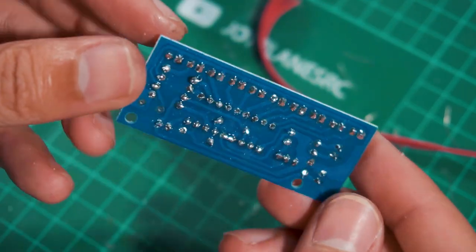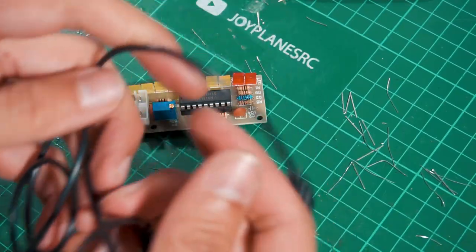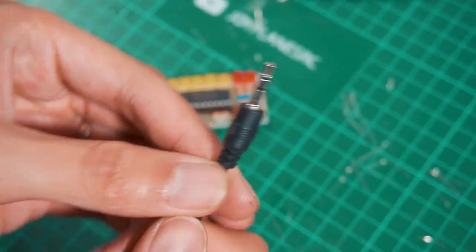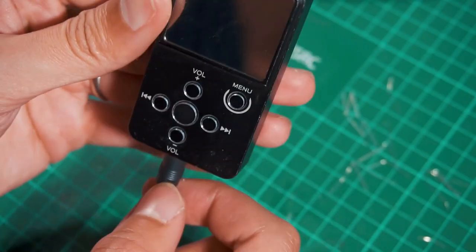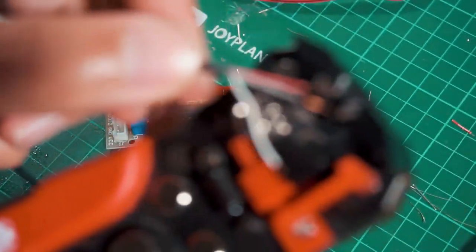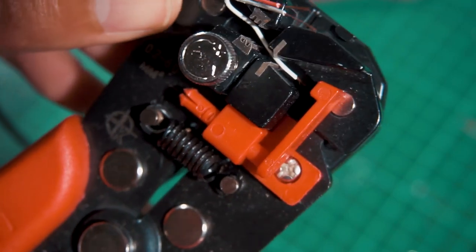And then I'm going to use a 3.5mm audio cable, but you can also use any kind of connector as long as you are getting an audio input signal. Now this is a stereo cable so we have left and right signals in two different wires and a ground wire.